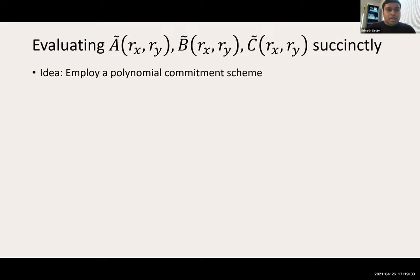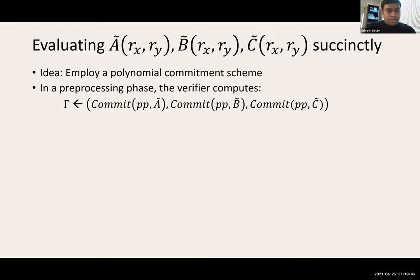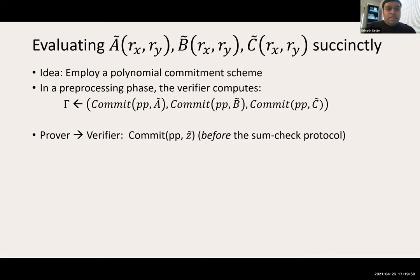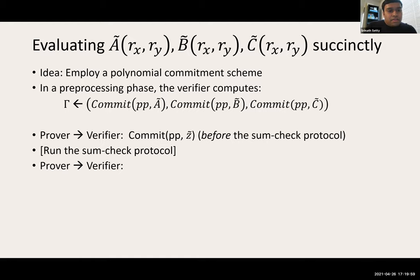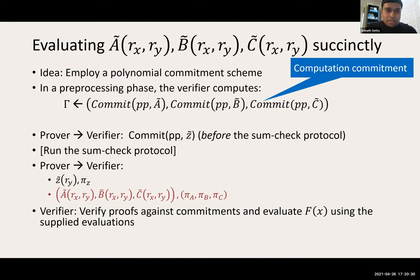Similarly, we employ a polynomial commitment scheme to commit to Ã, B̃, and C̃, which do not depend on the witness. In a preprocessing phase, the verifier computes three separate commitments — referred to as computation commitments since they encode commitments to the structure of the computation. The prover commits to Z̃ before the protocol, they run the sum check protocol, and then the prover sends evaluations of Z̃, Ã, B̃, C̃ along with four separate proofs. The verifier verifies all four proofs against their commitments and uses these evaluations to compute G.